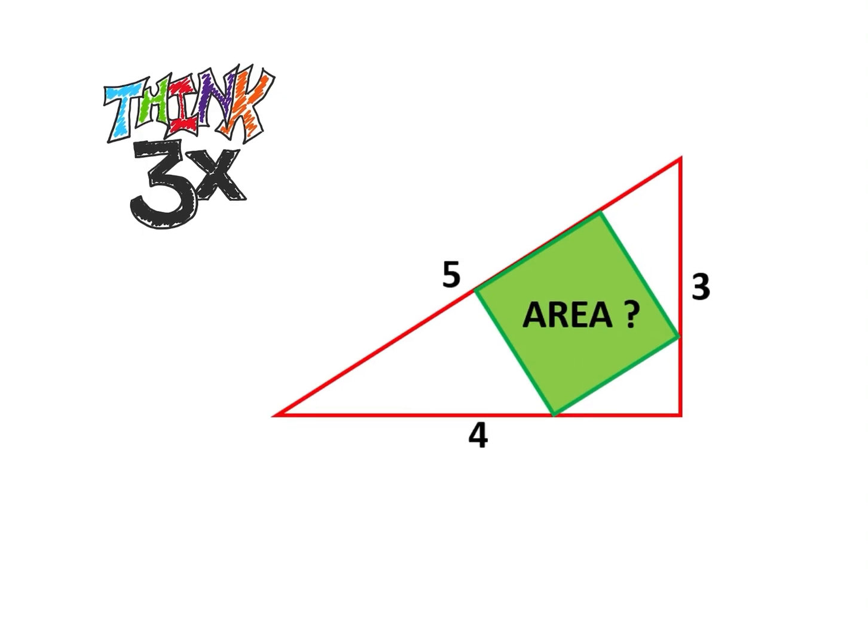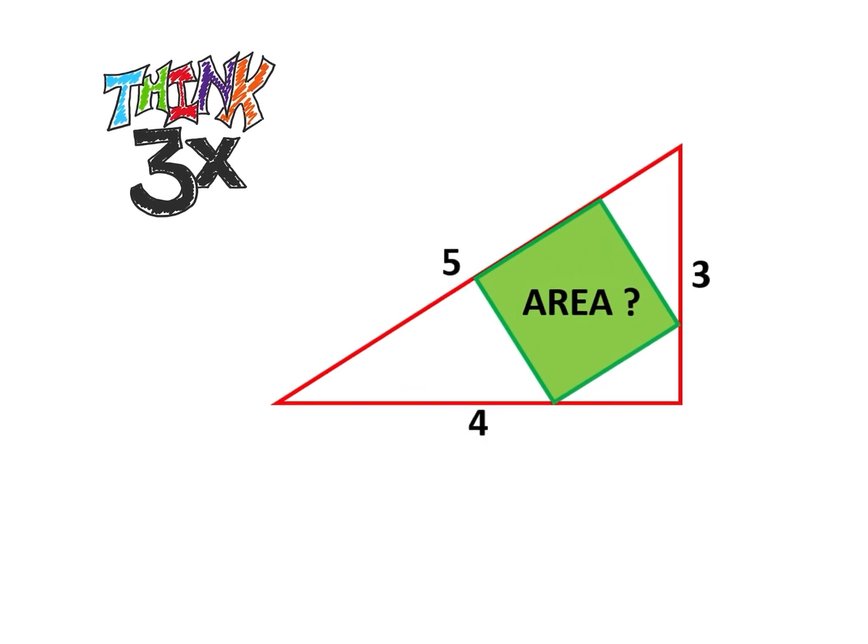So what we're going to notice here is that a 3, 4, 5 triangle, first off, if you didn't know, 3 squared plus 4 squared is equal to 5 squared. So that's 9 plus 16 is equal to 25. So this is in fact a right triangle.